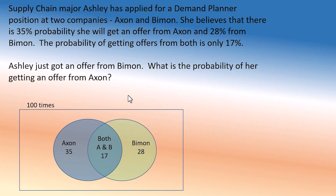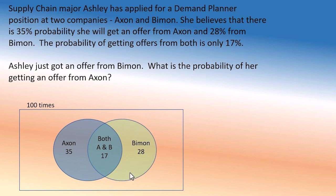Now let's work on the problem. She has an offer from Biman — if she has an offer from Biman, where is she? She belongs to the greenish circle. If she belongs to the outer part, she has an offer only from Biman. If she belongs to the overlapping area, she has offers from both Biman and Exxon. So if she belongs to this circle of 28, what are the chances she belongs to the overlap? That's 17 out of 28 — and that's her answer.